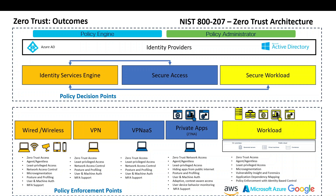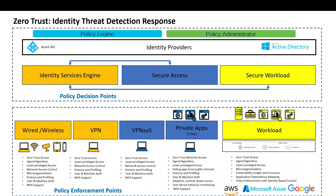Zero trust isn't only about policy decision points and enforcement mechanisms. You're still leveraging things like IPS to scrutinize packets, because you don't trust those either — even if the user authenticated and authorized and is on the network. You're probably still running traffic through IPS, doing inspection, and doing TLS decryption — or in Cisco's case using Encrypted Visibility Engine, which doesn't require full decryption to determine if something is bad. Many options are available.